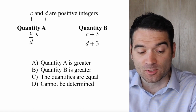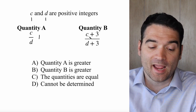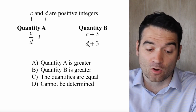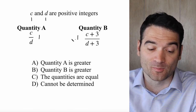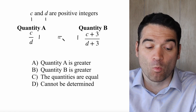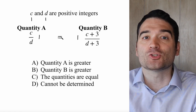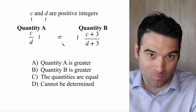If that's the case, then C over D is 1 over 1, or 1. And 1 plus 3 is 4, over 1 plus 3 is 4, which is also 1. So I have one case where these two quantities are equal.